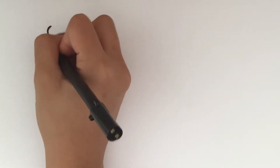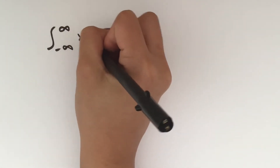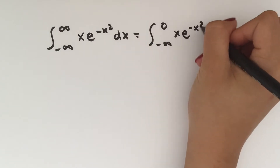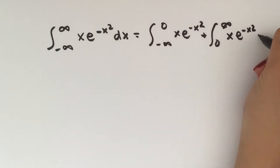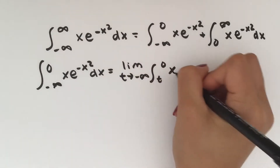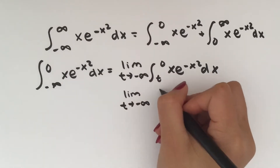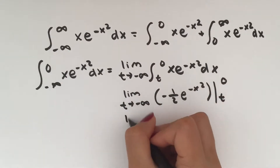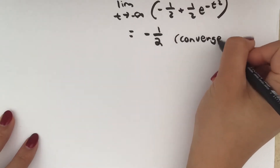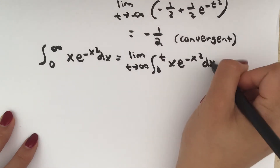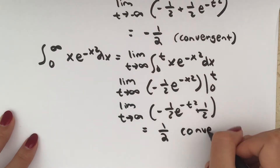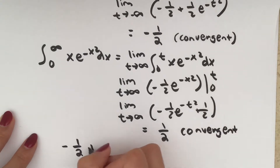For our last example with infinite intervals, we take the integral from negative infinity to infinity of x·e^(−x²) dx, which I'll call f(x) for convenience. Since we have infinities in both limits, we split the integral into two parts at x = 0. For the first integral, we take the limit as t approaches negative infinity of the integral from t to 0 of f(x) dx. The anti-derivative is negative 1/2 · e^(−x²) from t to 0, giving us negative 1/2 plus 1/2 · e^(−t²), and the limit as t approaches negative infinity yields negative 1/2 — the first integral is convergent. Repeating the same process for the second integral from 0 to infinity, we get 1/2. Adding the two values: negative 1/2 plus 1/2 equals 0.